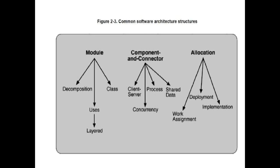In allocation structures, whatever has been defined in the modular structures and component structures is mapped through work assignment — the categorization of modules and how each module is working — and through deployment. After completion of the work assignment process, the total system is deployed on certain servers, and this deployment and work assignment is done through the implementation of code.